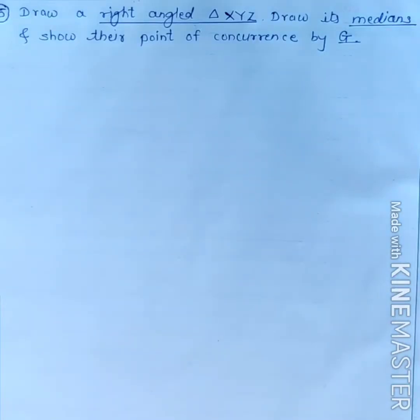Question number 5 from practice set 4.1. Draw a right angle triangle XYZ. Draw its medians and show their point of concurrence by letter G.